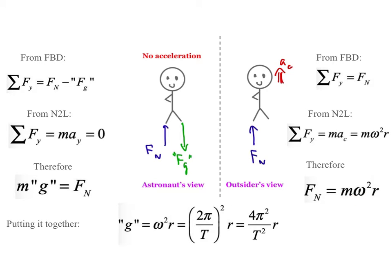Then we apply the reflexive property in algebra: the normal force equals itself — it's the same physical force, the same interaction between her feet and the deck plate. So Fn equals Fn, and mg equals m omega² r, meaning this fake g has to be omega² r. Remember that omega² r itself equals (2π/T)² times r, or 4π² over T² times r. The key thing is that everything on the space station has the same omega, or the same T, and therefore gravity depends only on your distance from the axis. If we know the period or angular velocity, we can figure out what force of gravity she would seem to feel.